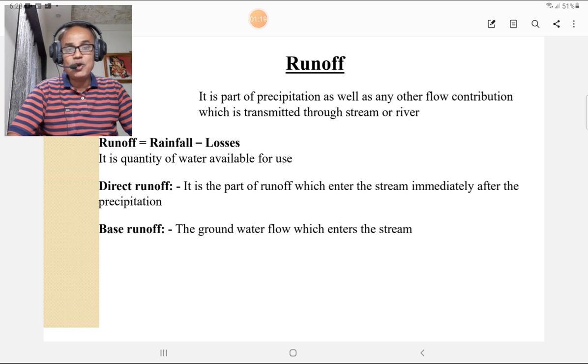What is direct runoff? It is the part of runoff which enters the stream directly after the precipitation. In Marathi, the water reaches to the river by through Ohor or Nale. That is direct runoff. And what is the base runoff? The groundwater flow which enters into the stream is called base runoff, which is nothing but the Jharay in Marathi.